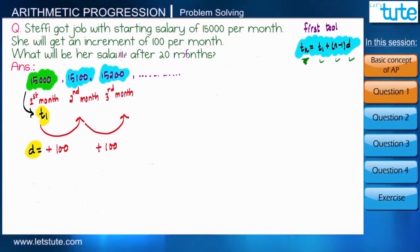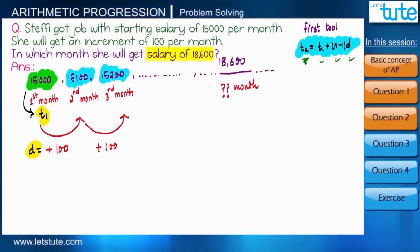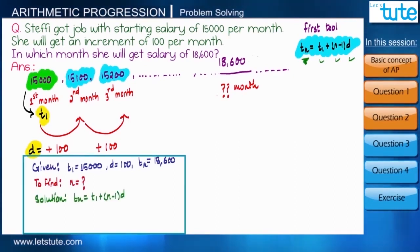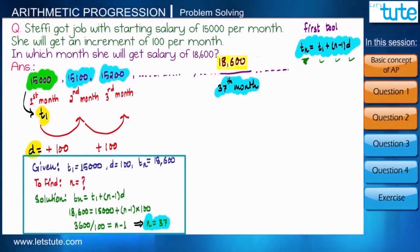So if we understand the situation, we can solve any kind of arithmetic progression very easily. Now let me twist the question a little bit. You tell me in which month her salary will be 18,600. So can you guess what is given and what is asked? See, t1 and d will remain same, but this time value of the term is given, that is tn equals 18,600, and the position of that term is asked, so we have to find n. So by substituting values we will get n equals 37, that means she will get 18,600 in 37th month.